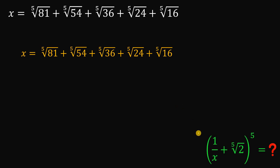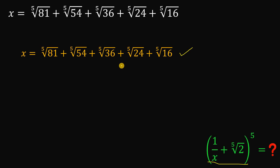How do we get the value of this expression? First, we need to get the reciprocal of x, then add p-th root of 2, then raise to the p-th power. We cannot use this value of x directly because there are a lot of p-th roots and getting the reciprocal is messy. So to answer this, we will rewrite and simplify x before evaluating the expression.